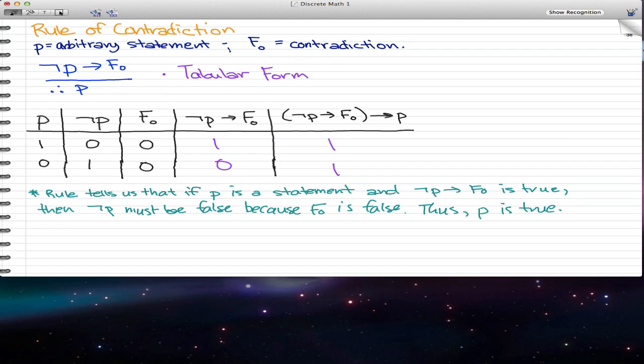So, this rule pretty much tells us that if P is a statement, if this is just a statement, and this negated P implies FO is true, so that means that what we know is negated P is false. So, that negated P implies FO is just validating that negated P must be false because FO is false. If negated P implies FO is true, then that pretty much validates that negated P is false. Thus, we know that if negated P is false, then P must be true.